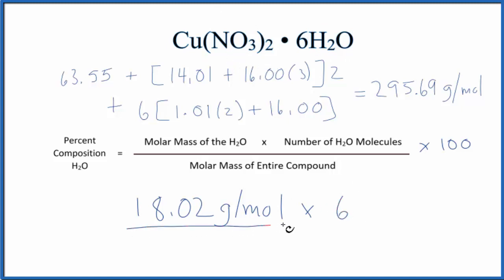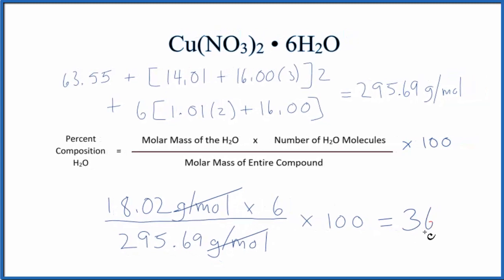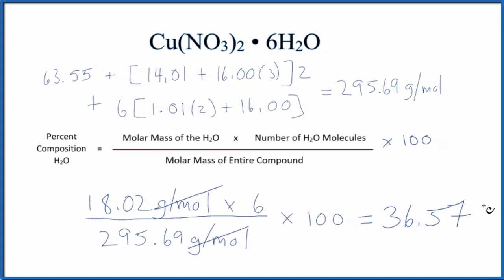Then we'll divide the whole thing by the molar mass of the entire compound. That's what we just found here. Note that grams per mole on the top and bottom cancels out. We end up with 36.57%.